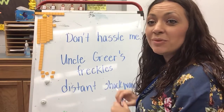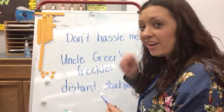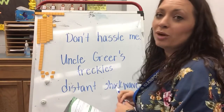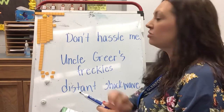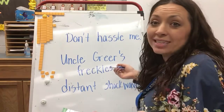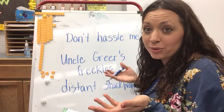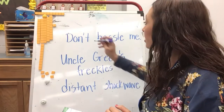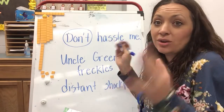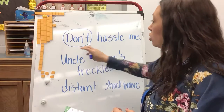Hi guys! Today we have lots of words to code. Let's look at our first word. We talked about this last week. I have the word 'don't.' I can't code it — it's a contraction and it doesn't even follow the rules of a contraction. So I'm going to circle it because this tells me I just have to know that as one whole word. So, 'don't.'